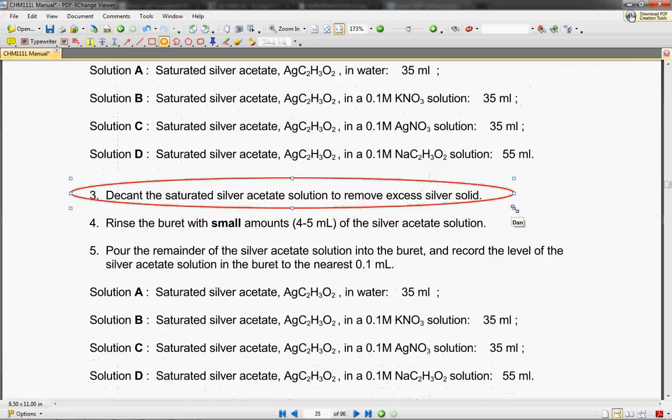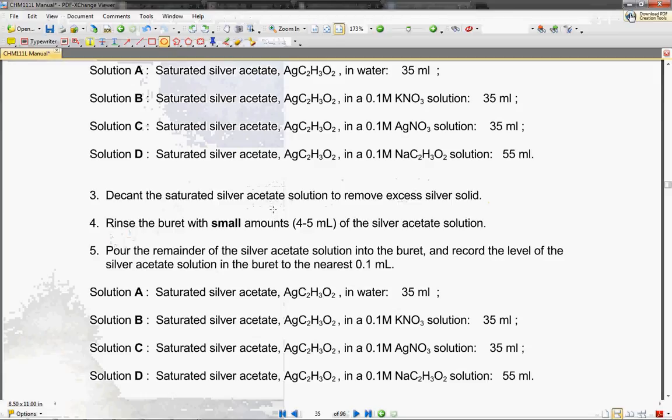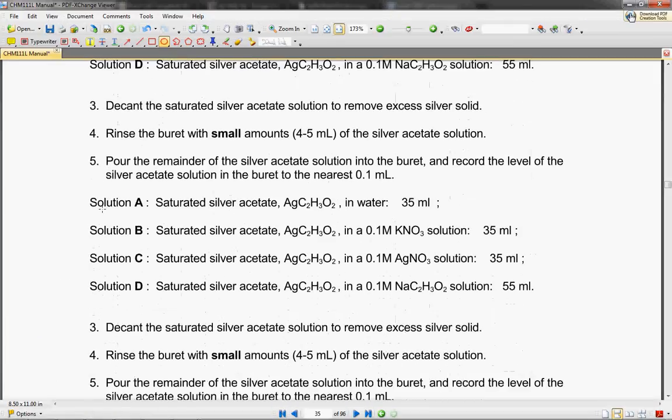And you're going to decant the saturated silver acetate solution. What does that mean? That literally just means waiting for the silver. You're actually going to be able to see a little bit of silver at the bottom, especially for the groups that have added acetate. So a little bit of silver might fall out, so you'll open up your little stopcock to let that silver out, and that's how you will remove the excess silver solid.